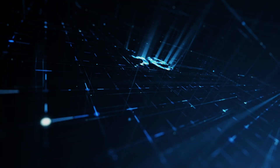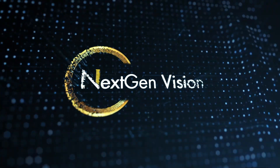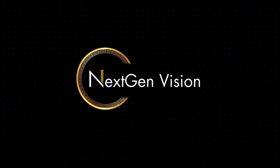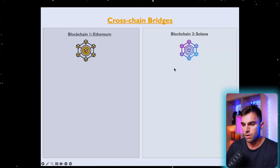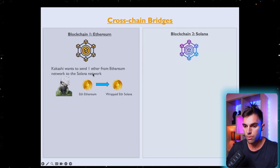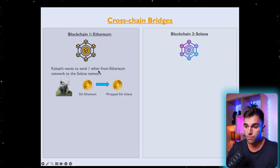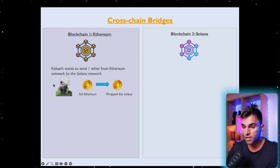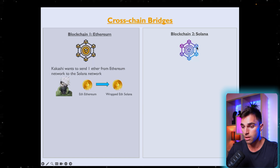Let's actually have a look at how cross-chain bridges work. We've got two blockchains: blockchain one is Ethereum and blockchain two is Solana. The objective is that Kakashi wants to send one Ether from the Ethereum network over to the Solana network — he's got one Ether on Ethereum but needs that asset on the Solana network.